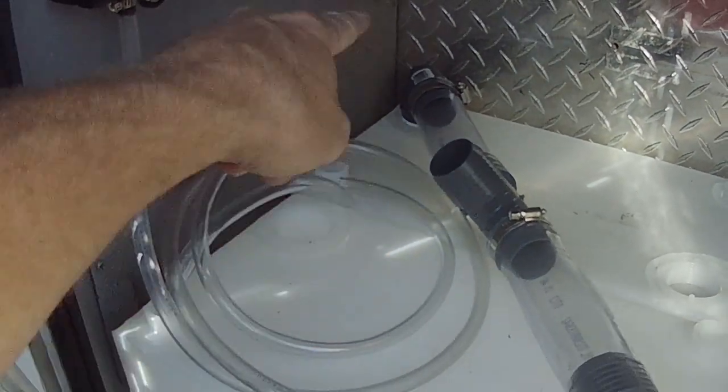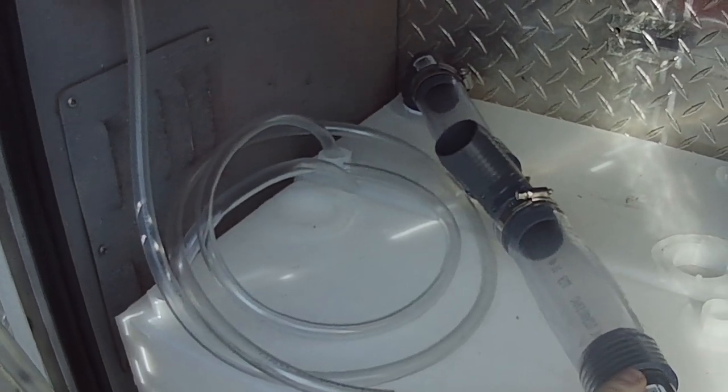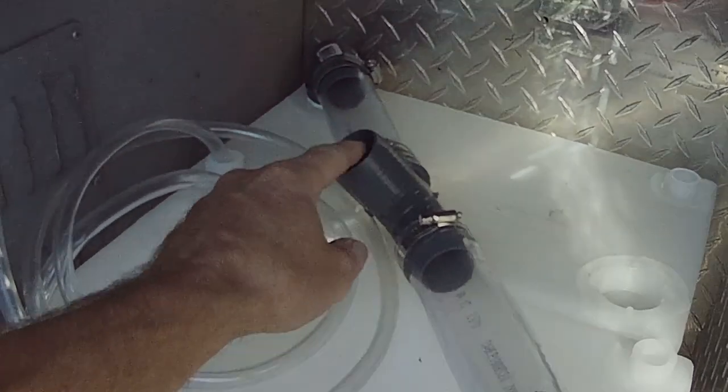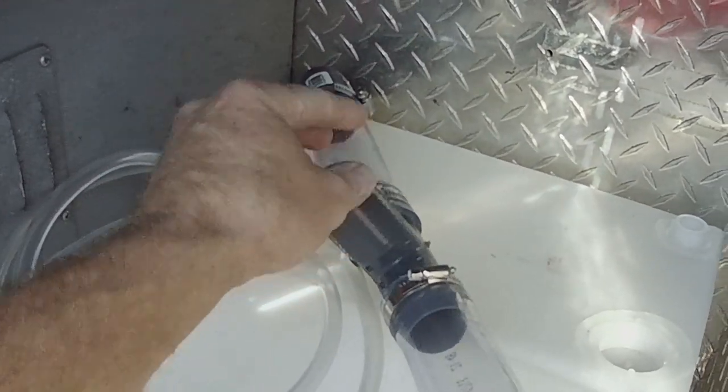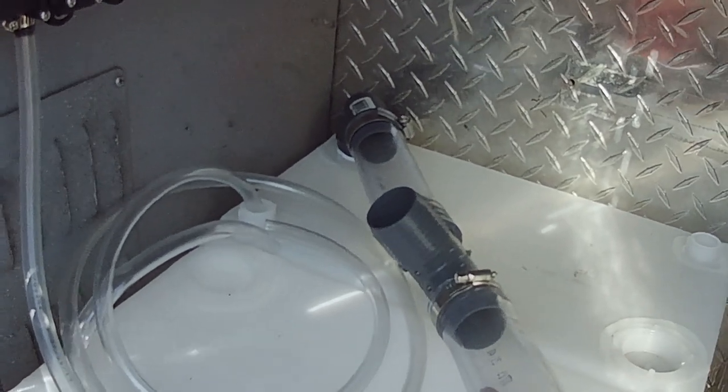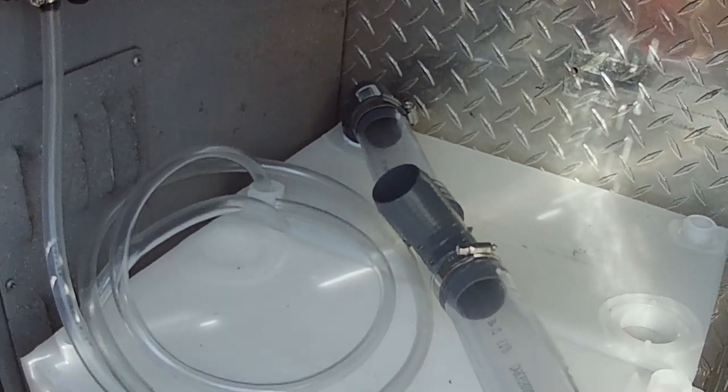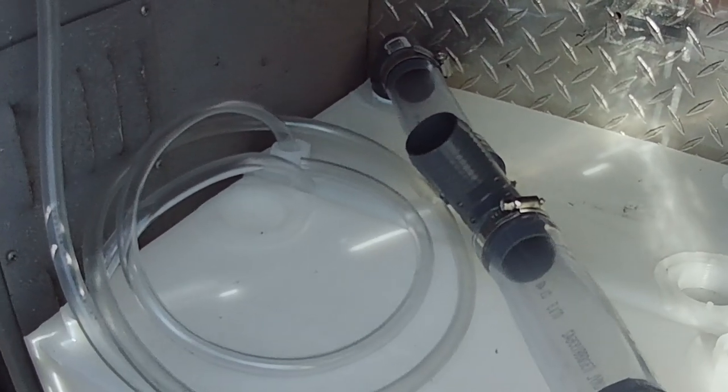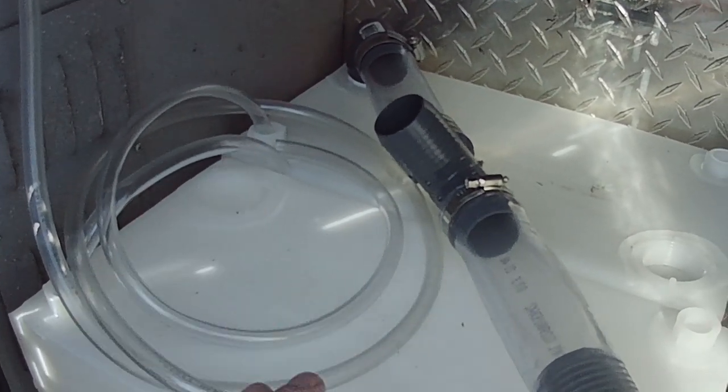This is my filler system. I've got the two tanks joined together with this one and a half inch large pipe. And then off of this is going to be the filler hose. I wanted to use the large diameter so I can fill them quickly.